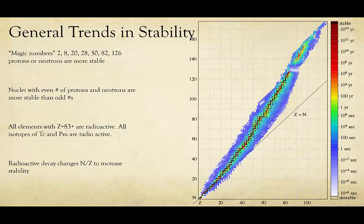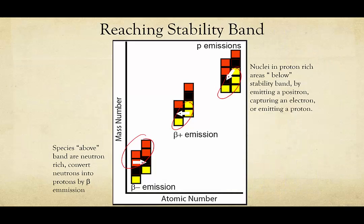With those rules aside, let's look in more detail at the decay that happens in order to reach the band of stability in terms of the ratio of neutrons to protons. Here we have a very zoomed-in version of the graph. If species are above the stability band, they have too many neutrons per proton. They will undergo beta minus emission, which effectively changes a neutron into a proton, lowering the ratio.